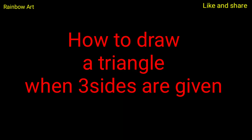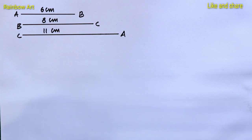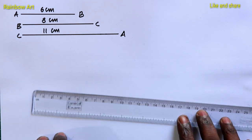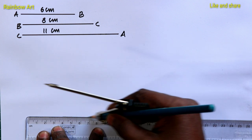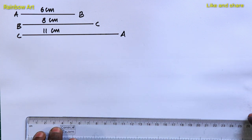Now we are going to learn how to draw a triangle when three sides are given. You may give three different size of triangles. Suppose the sides are 6 cm, 8 cm and 11 cm.